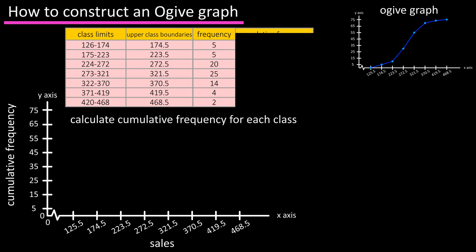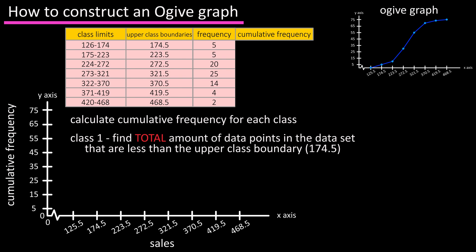Next we need to calculate the cumulative frequencies for each of the classes. So for the first class we need to find the total amount of data points in the data set that are less than the upper class boundary of class one, which is 174.5. We can see in the frequency distribution table that there are five values that satisfy this.